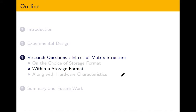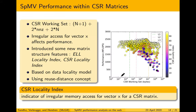Next we look at our second research question: the effect of matrix structure within a storage format. One feature we examine is CSR working set — the memory footprint of matrix A plus vectors x and y. When we plot CSR working set against SpMV performance, we see that matrices with the same working set can still perform very differently. To answer this, we introduced a new feature called CSR locality index — an indicator of irregular memory accesses for vector x in a CSR matrix, based on the data locality model using the reuse distance concept.